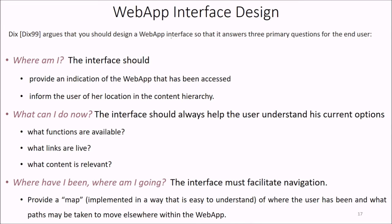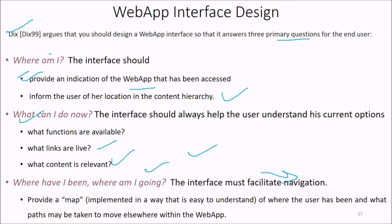For web application interface design, Dix argued that you should design a web app interface to answer three primary questions: Where am I? What can I do now? And where have I been, where am I going? 'Where am I' means providing an indication of the web app accessed and informing the user of their location in the content hierarchy. 'What can I do now' addresses what functions are available, what links are live, and what content is relevant. 'Where have I been / where am I going' means facilitating navigation by providing a map of where the user has been and what paths may be taken.